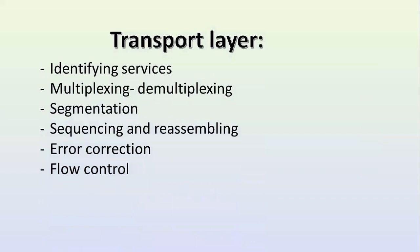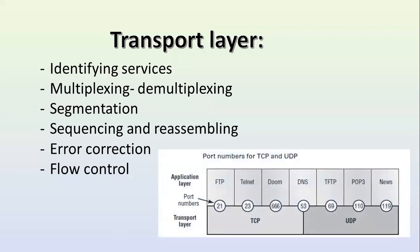The transport layer is the heart of the OSI model. Several functions take place here: identifying services, multiplexing, demultiplexing, segmentation, sequencing and reassembling, error correction, and flow control. The identification of services here is done on the basis of TCP or UDP — the services identified on the application layer can be either TCP or UDP.